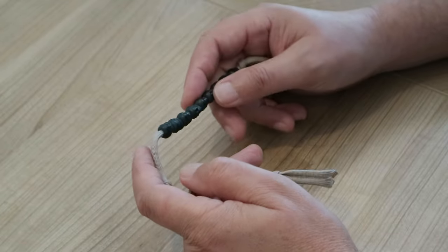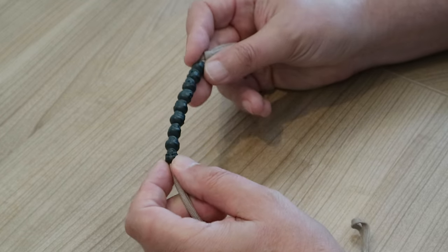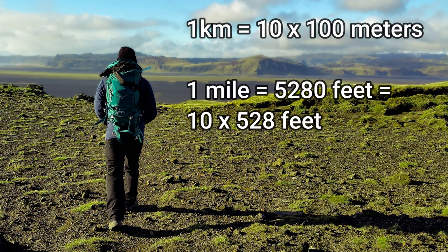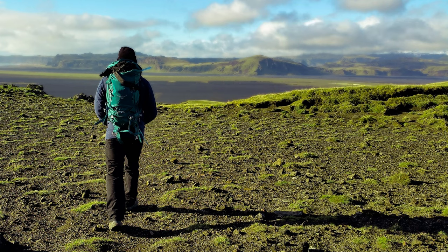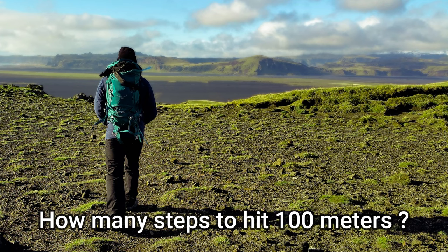Now imagine this you want to record how far you have been walking. Well for that you need to know how many steps you take when you walk for example 100 meters. Now I'm doing this in meters you can do this in miles as well. So 100 meters is one tenth of a kilometer and 528 feet is one tenth of a mile. So if you're working in miles you can calculate the number of steps you walk to cover 528 feet. If you're working kilometers you look at how many steps to cover 100 meters.